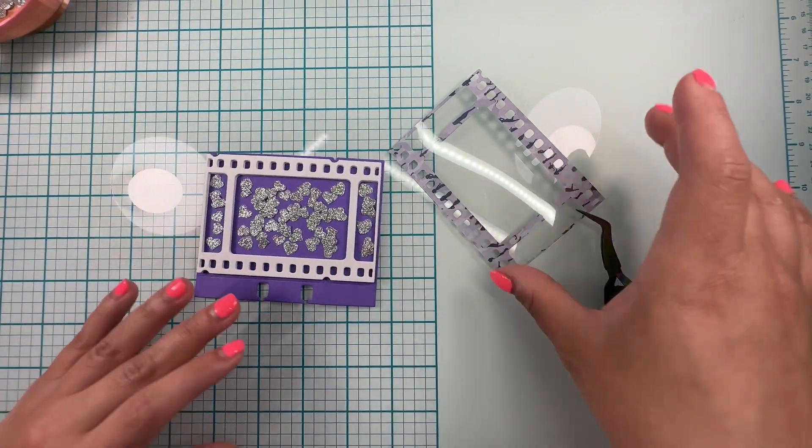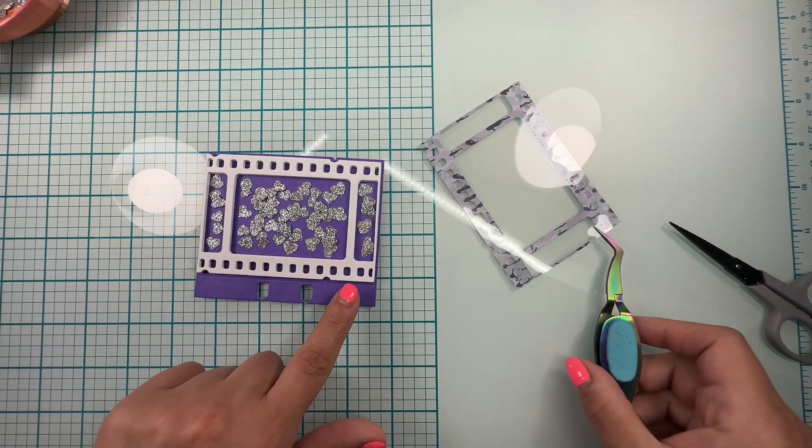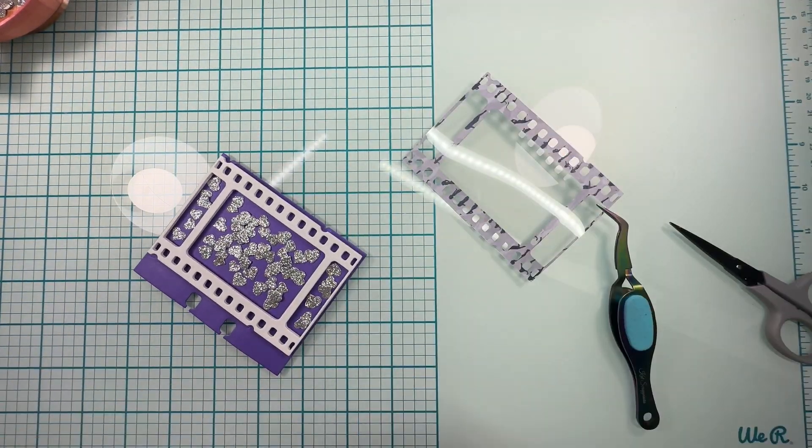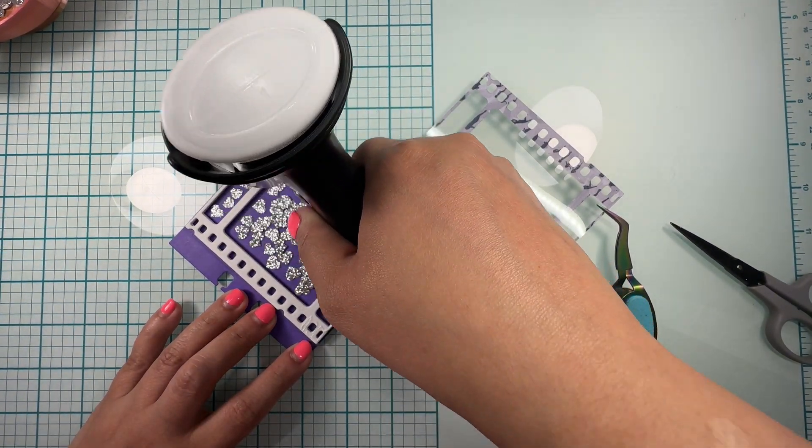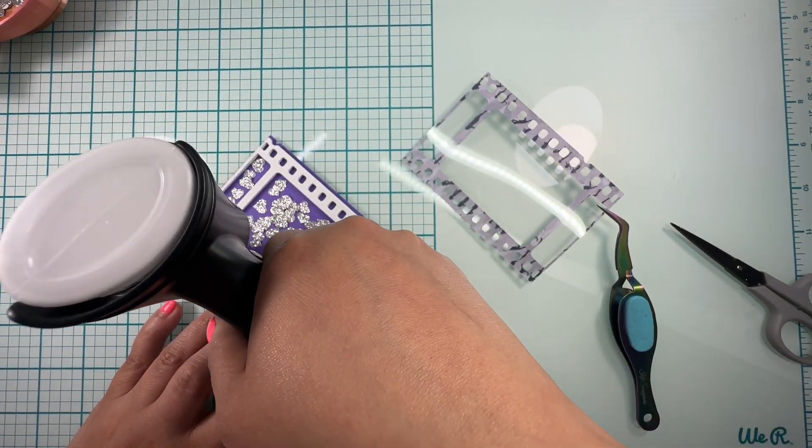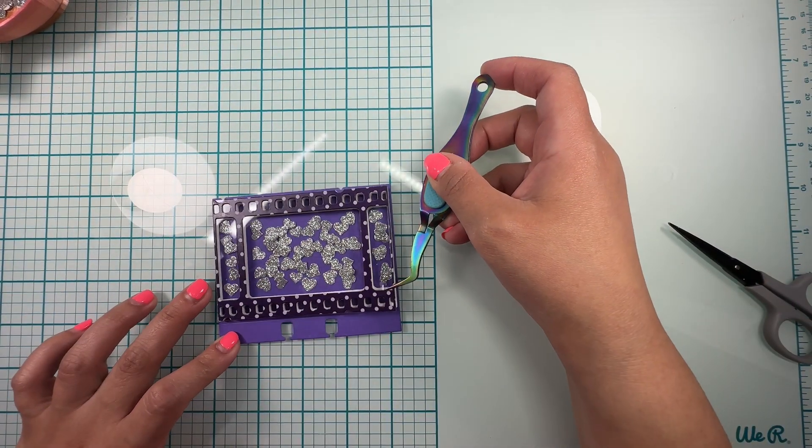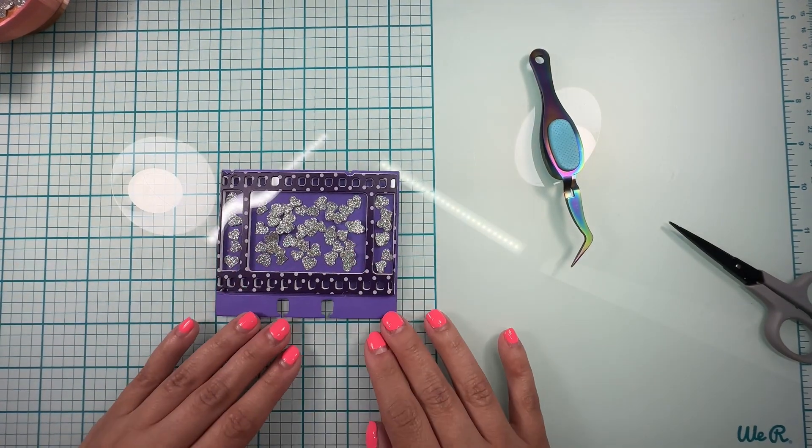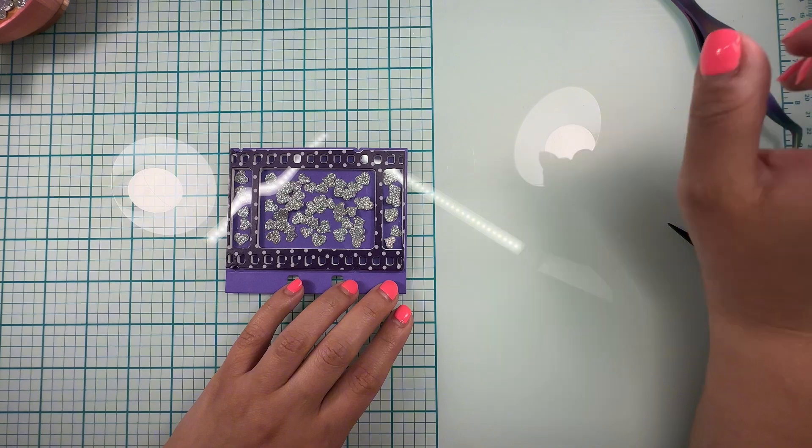So what I'm gonna do now is add my sequins. I think that's good, now I'm gonna go ahead and add glue to this part.